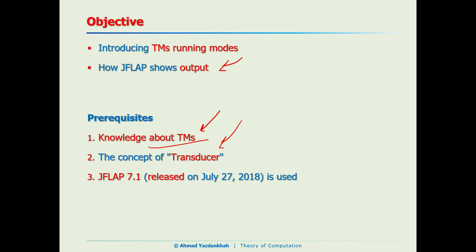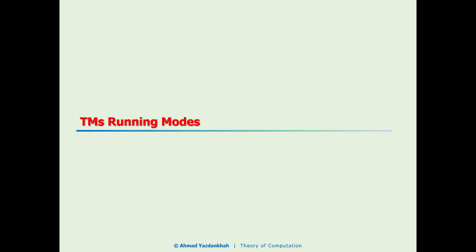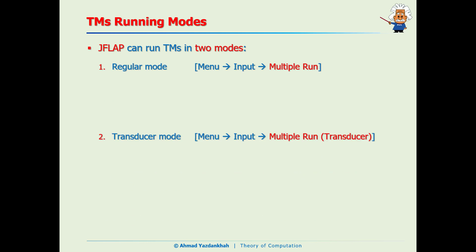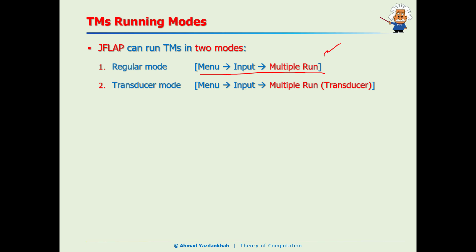To understand this tutorial we would need some knowledge about the Turing machines. We need the concept of the transducer and also we will be using JFLAP 7.1. Let's first introduce different modes that we can run Turing machines by using JFLAP. JFLAP can run Turing machines in two modes: regular mode that we can access from the menu Input Multiple Run, I will show you shortly, and also transducer mode.